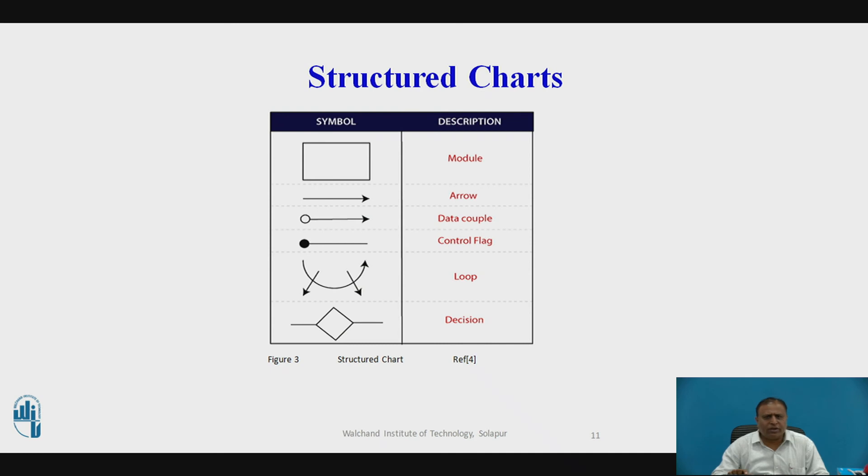These are the notations used in drawing the structural chart. The rectangle means module, the arrow means flow of data for data communication. The bubbled arrow, solid arrow is control flag. Another loop is used for looping. For decision, the diamond is used.